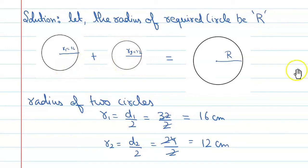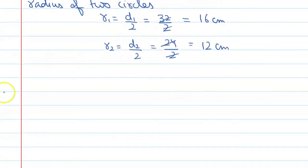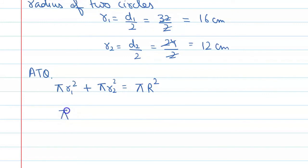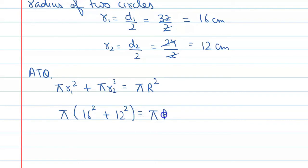According to the question, the area condition gives us: π·r1² + π·r2² = π·R². Taking π as common and substituting r1 = 16 and r2 = 12: 16² + 12² = R². This π cancels with the other π.